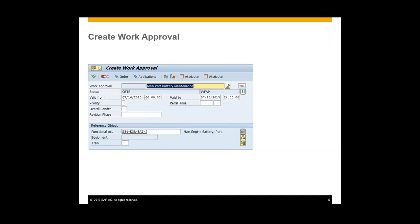After you create this order and activate work clearance management, you will create a work approval. Work approvals link plant maintenance orders to work clearance applications. After the work order, we'll create the work approval.